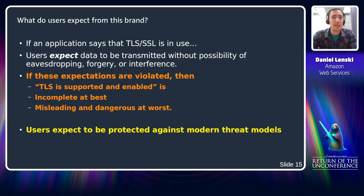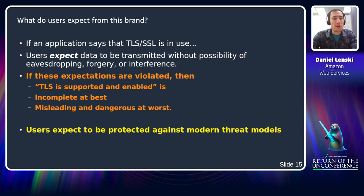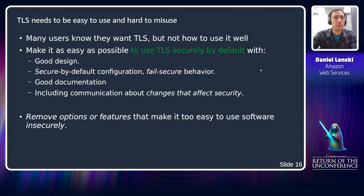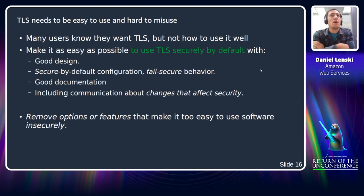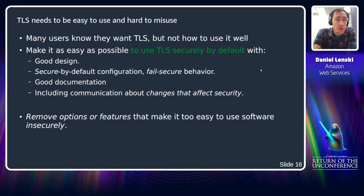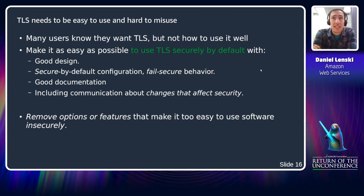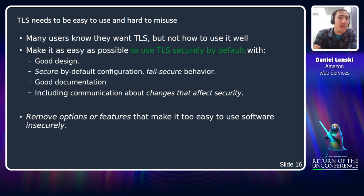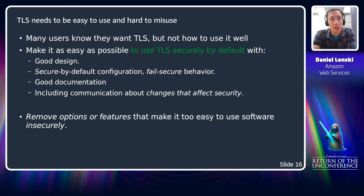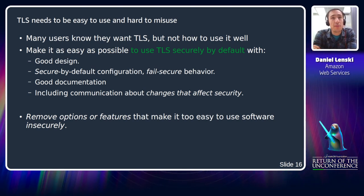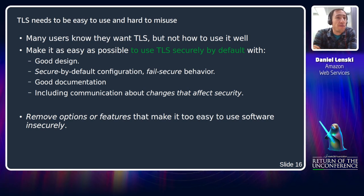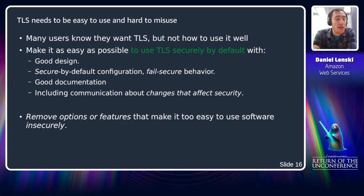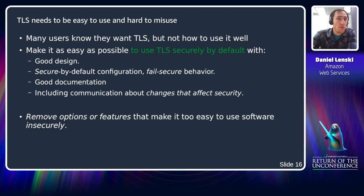Users really expect to be protected against modern threat models. Many users know that they want TLS, but not how to use it well. So applications should make it as easy as possible to use TLS securely by default — that means good design, secure-by-default configuration, fail-secure behavior, and simple configuration. Good documentation, including communication about changes that affect security. Also, if a feature makes it too easy to use the software insecurely and there's a better replacement, remove it.